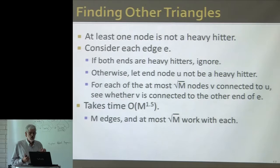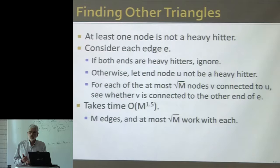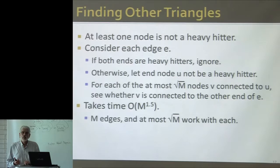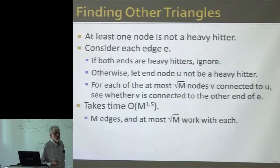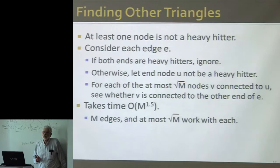A student asks what kinds of graphs are in mind, since square root of m degree is quite large. For Facebook: n is a billion, m is 300 billion. Nodes times edges is about 3 times 10 to the 20th — a big number. Square root of m is going to be about half a million. Usually Facebook friends are in the hundreds to thousands, so it's in the millions for high-degree nodes.